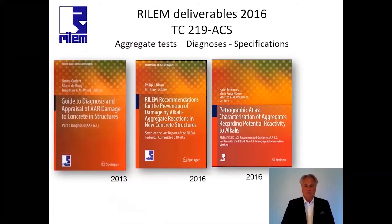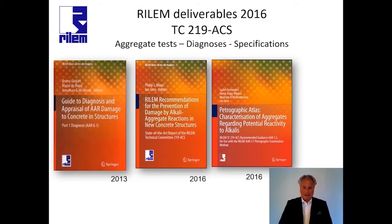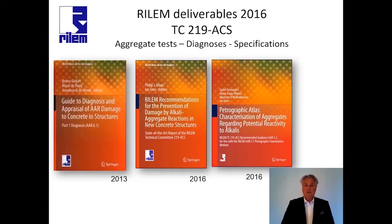The publications and deliverables from these three TCs by Nixon and Simms included: a Springer publication in 2013 on the guide to diagnosis and appraisal of AAR damage to concrete structures; RILEM recommendations published in 2016 for the prevention of damage by AAR reaction in new concrete structures; and additionally, a very comprehensive petrographic atlas with many examples of thin section micrographs of reactive rock aggregates from around the world.